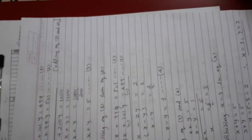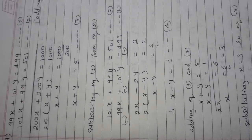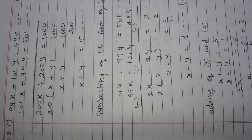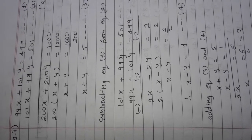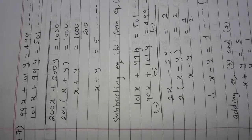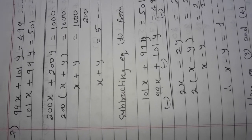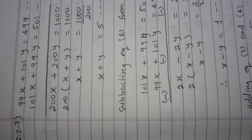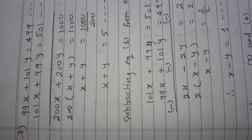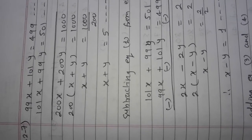Now let us come to question number 7 of question number 2. It is 99x plus 101y is equal to 499, equation number 1, and 101x plus 99y is equal to 501, equation number 2. Students, notice carefully — the coefficients of x and y are interchanged: 99, 101 and 101, 99. For such problems, we add both equations once and subtract once.